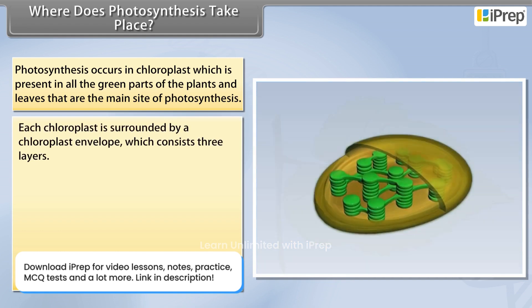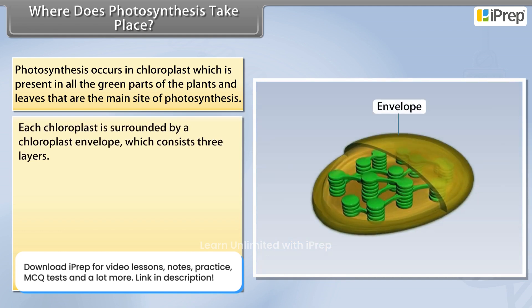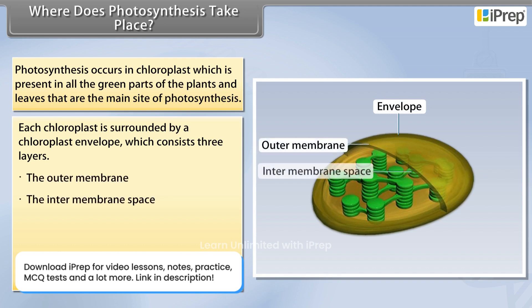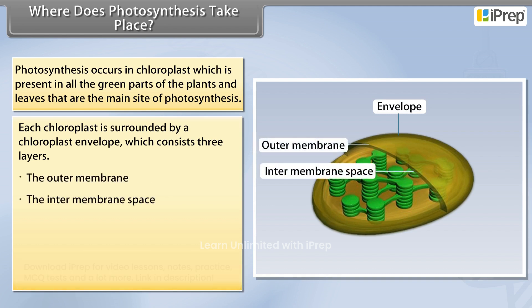Each chloroplast is surrounded by a chloroplast envelope which consists of three layers. They are the outer membrane, the inter-membrane space, and the inner membrane.